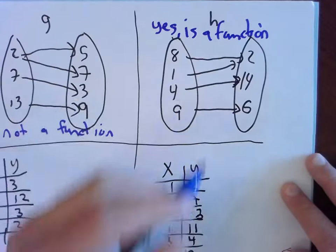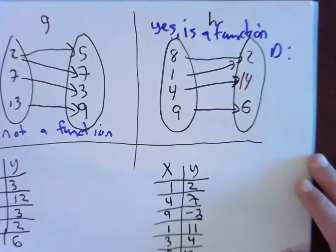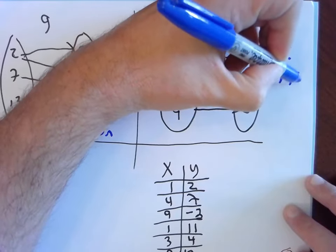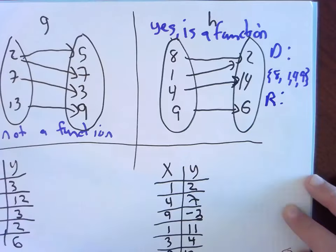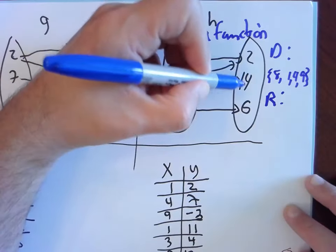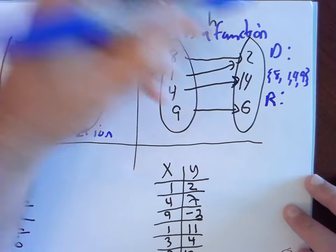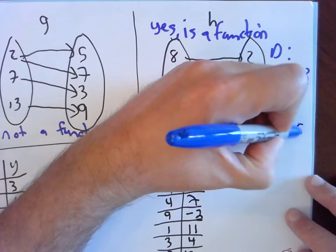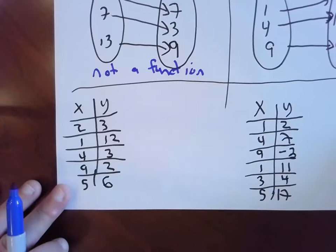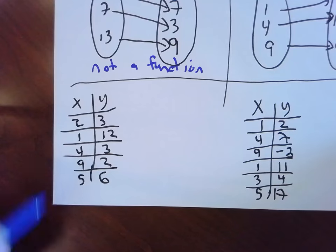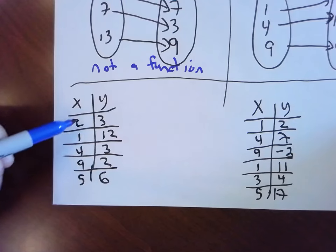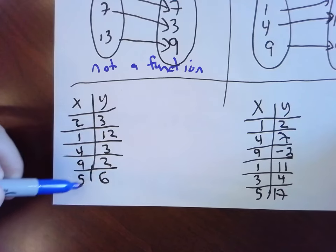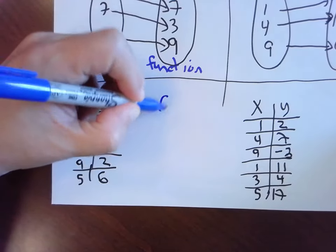What is the domain of H? The domain is the set of all allowed inputs: {8, 1, 4, 9}. And the range — over here all of our outputs are 2, 14, and 6. We hit 2 twice but we don't list it twice. Now looking at this XY chart: does this represent a function? Does every input have exactly one output? We've got some repeated y's, but we don't care about that. We only care about whether there are any repeated x's. This is a function — there are no repeated x's.